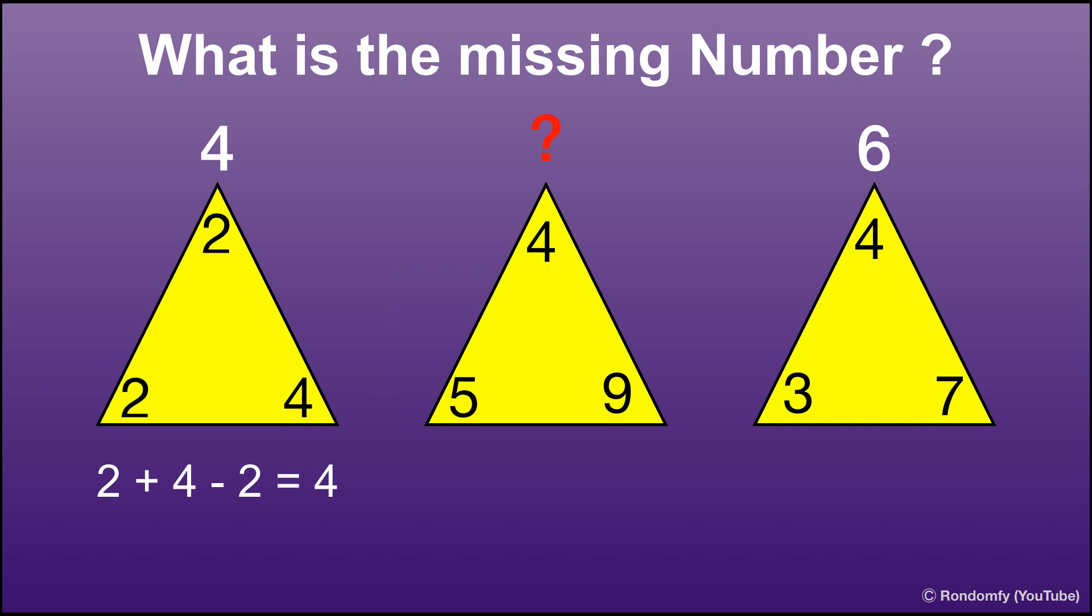And for the third triangle, 3 plus 7 minus 4 equals 6.